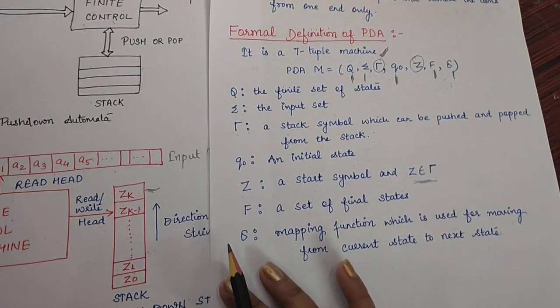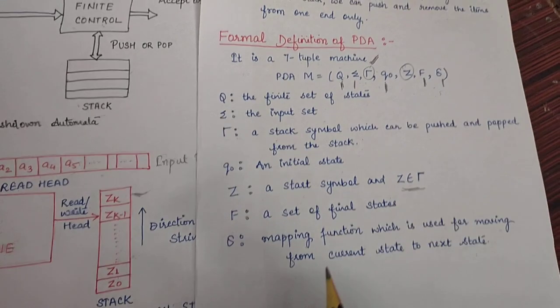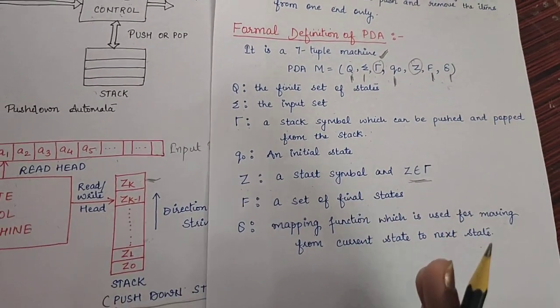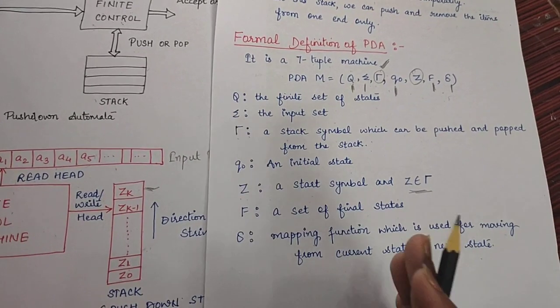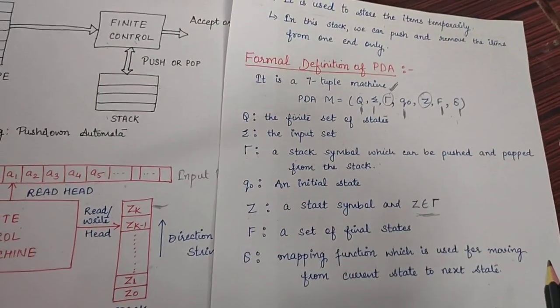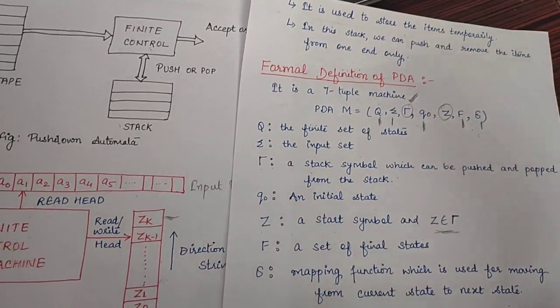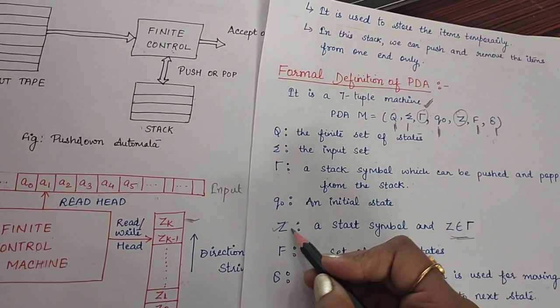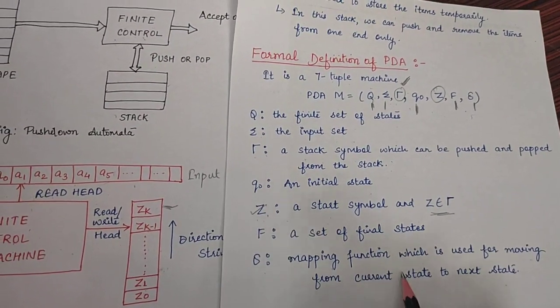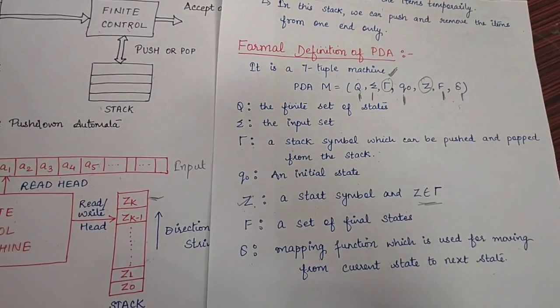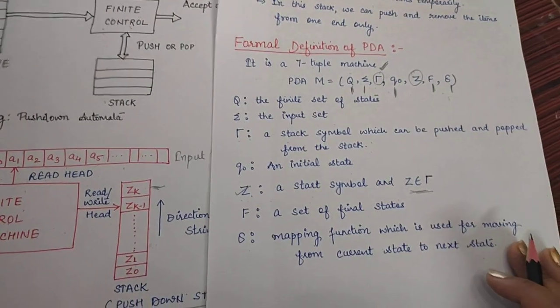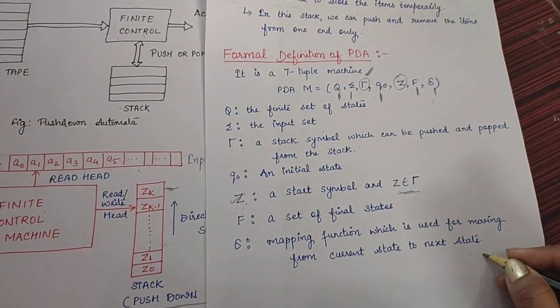We are saying it is a start symbol because whenever we start our transitions, the stack is initially empty. So, to start with working, to start with transitions, first of all, we have to insert this start symbol onto the stack. That's why this is Z. Delta will be the mapping function which is used for moving from one state to another state.